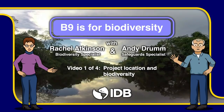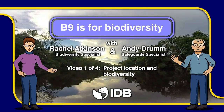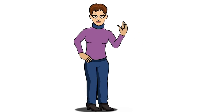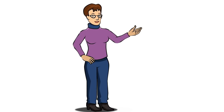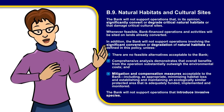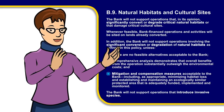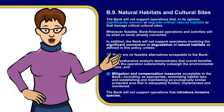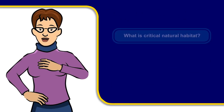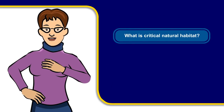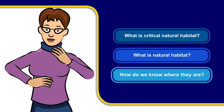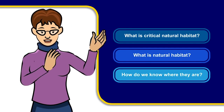B9 is for Biodiversity, with Rachel and Handy. Let's start by presenting the B9 policy. The first read of it can be confusing, but there are a few key words that are important for understanding the policy, and these are the words we will focus on in these short videos. What do we mean by critical natural habitat and natural habitat? How do we know what we have and where they are?